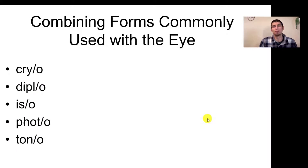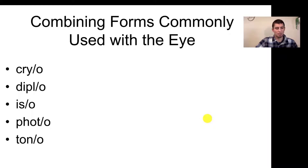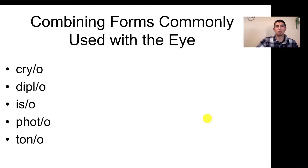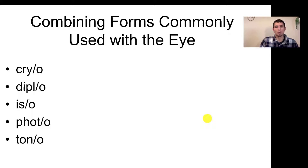We're now looking at some combining forms commonly used with the eye on page 522, and then prefixes on 523 and suffixes as well. We'll be using these terms when it comes to disease and disorder terms. Just remember: cryo as in cold, diplo as in two, iso meaning equal, photo meaning light, and ton meaning pressure. For prefixes, bi- meaning two. Suffixes: -opia meaning vision or a condition of vision, -phobia meaning an irrational fear, and -plegia referring to paralysis.